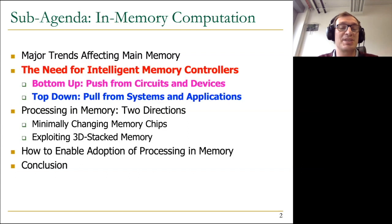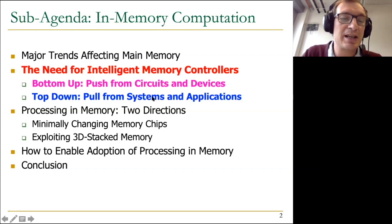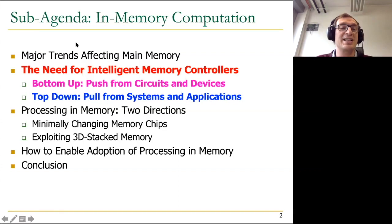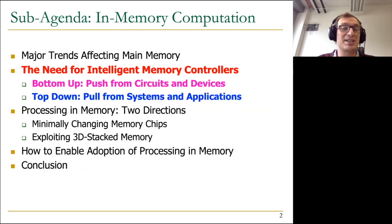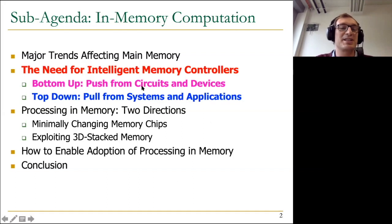Now I'm going to talk a little bit more top-down and give you the pull from systems and applications. We've talked about this a little when we covered major trends, but we're going to cover it more in the context of processing in memory, because processing in memory is ultimately going to accelerate applications. There is a push from circuits and devices to make the memory controller more intelligent, but this doesn't necessarily mean you should execute applications close to memory just for that reason.